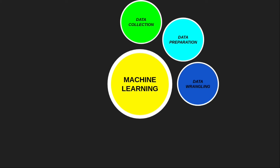The fourth step in the machine learning project development life cycle is data analysis. The cleaned and prepared data is passed on to the analysis step. The aim of this step is to build a machine learning model to analyze the data using various analytical techniques and review the outcome. It starts with the determination of the type of problem, where we select the machine learning technique — such as classification, regression, or cluster analysis — and then build the model, prepare the data, and evaluate the model.